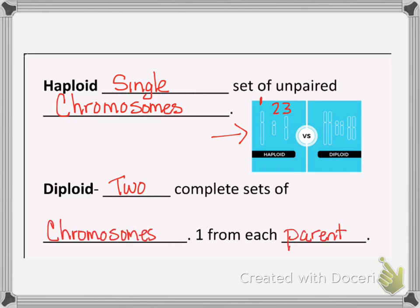I numbered these to show you that these two here are one set, and these two here are another set. One is the mom's and one is the dad's. So each one of those is from one parent, making it a set.